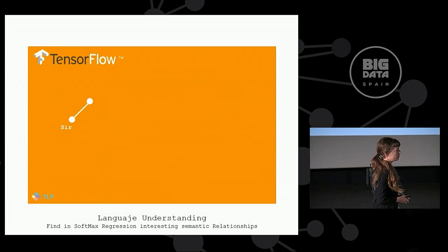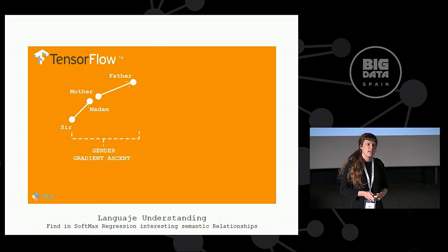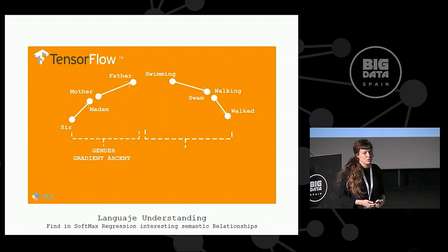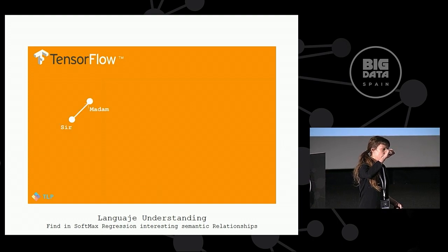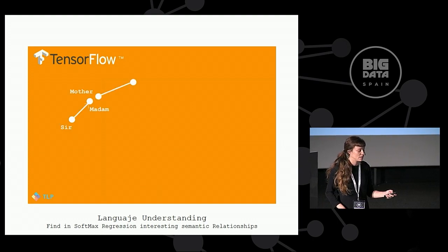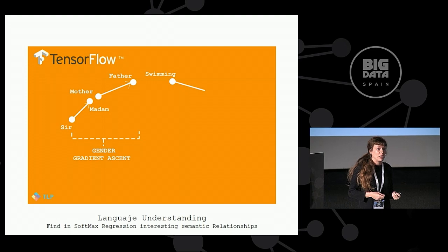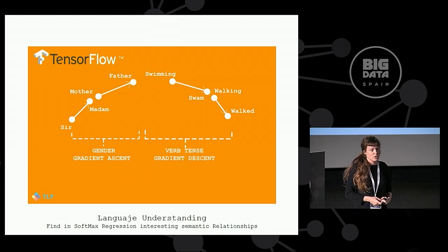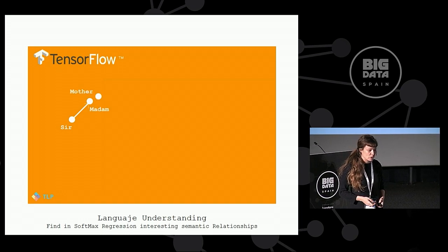TensorFlow is also working with language. We as humans are creating a semantic approach always with words. What TensorFlow does is it creates arrays that talk about semantic relationships — processes like gender: sir, madam, or mother, father; or verbs: I was swimming, then I swam; I was walking, then I walked. It's like a mathematical abstraction that tells us about language.